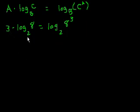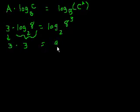So let's see what this is. 3 times log base - what's log base 2 of 8? 2 to what power is 8? Well, 2 to the third power is 8, right? So that's 3. And we have this 3 here. So 3 times 3. So this thing right here should equal 9.